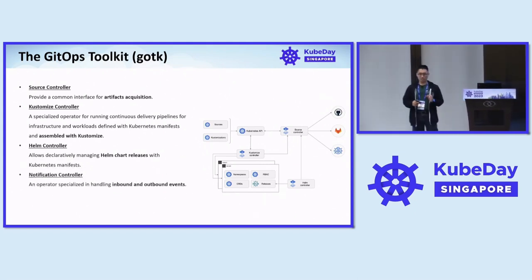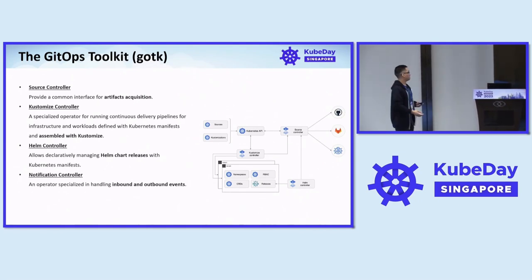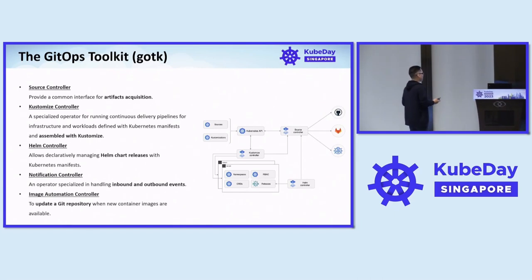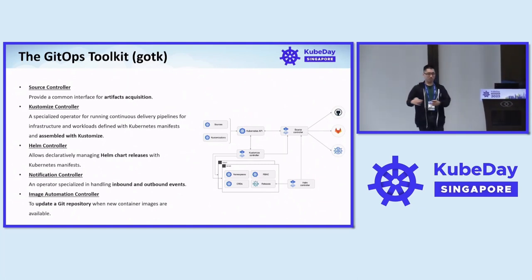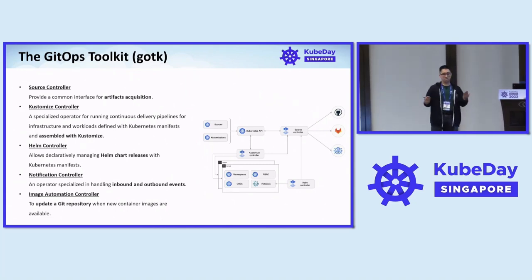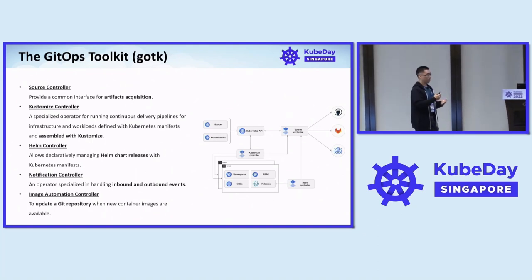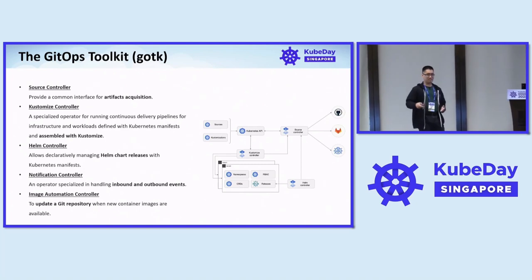There's also a notification controller — if there are any changes to your cluster, it notifies you via Microsoft Teams, Discord, etc., telling you what resource was deleted, which commit caused it, and so on. And there's the image automation controller — it monitors a repository and if the latest release is version 2 but your configuration says version 1, it will automatically open a new branch and submit a pull request for seniors to review and merge.